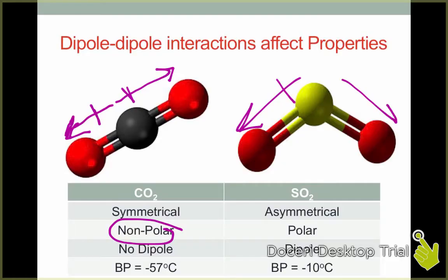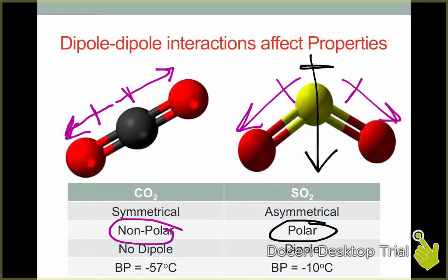SO2, on the other hand, does exhibit a molecular dipole. Both bond dipoles point downwards towards the oxygen, so the overall molecular dipole points downwards, indicating a negative end at the bottom and a positive end at the top. This makes it a polar molecule. Notice that the boiling point of SO2 is much higher than that of CO2, because the dipole-dipole interactions make the molecules more difficult to separate from one another.